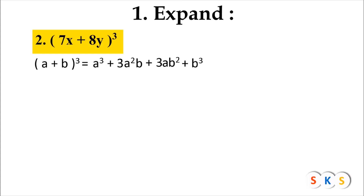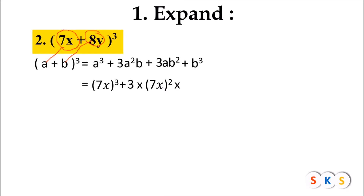The first term of the binomial is 7x. So we will take a as 7x, and the second term of the binomial is 8y, so we will take b as 8y. Now we will substitute the value of a and b in this formula. So it is a raised to 3, that is 7x the whole cube, plus 3 into a squared — 7x — so 7x the whole squared into b, that is 8y. Plus 3 into a, that is 7x, into b squared.